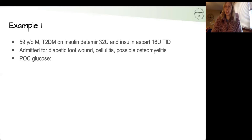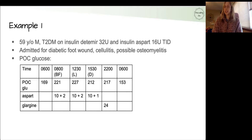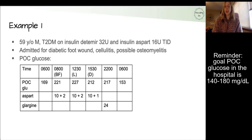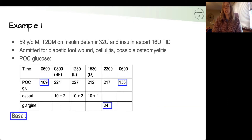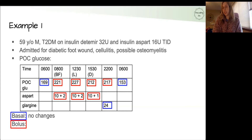Let's say this patient has had a day in the hospital and now you're pre-rounding the next morning. Looking at his point-of-care glucose measurements from the previous day, you can see some numbers were above goal. In the aspart row, he did receive some correction factor — he got his meal dose of 10 plus a few extra units at each meal. How do we adjust his insulin orders? Starting with basal insulin: his fasting sugars two days in a row were within goal at 169 and 153. Our goal is 140 to 180, so we don't need to change his basal dose — we can keep that as is. On the other hand, his mealtime sugars have been pretty high. He was getting one to two units of extra insulin per meal, so we can add those extra two units to his meal dose and increase the aspart meal dose to 12 units.